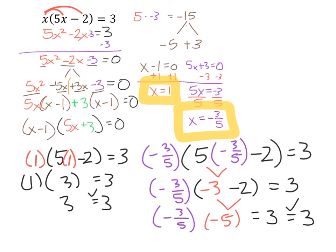another 3. So this is also a true statement. So we've checked and verified that x equals 1 and x equals negative 3/5 to be true, and this problem is solved.